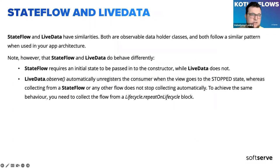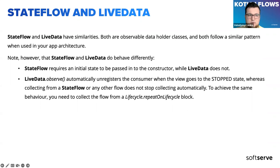StateFlow and LiveData have a lot of similarities — both are observable data holder classes and both follow a similar pattern when used in app architecture. However, they do behave differently. StateFlow requires an initial state to be passed into the constructor, while LiveData doesn't. Also, LiveData automatically unregisters the observer when the view goes to a stopped state, whereas collecting from StateFlow or any other flow does not stop automatically. To achieve the same behavior, you need to collect the flow from within a repeatOnLifecycle block.